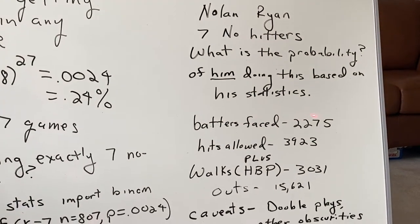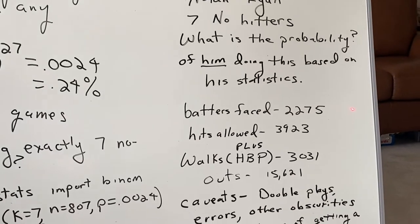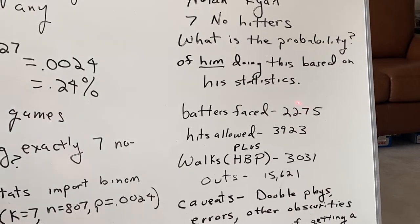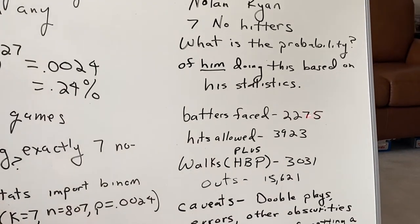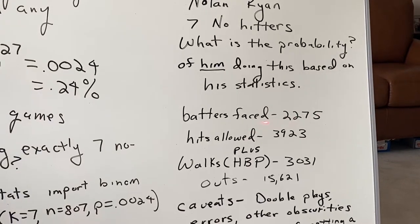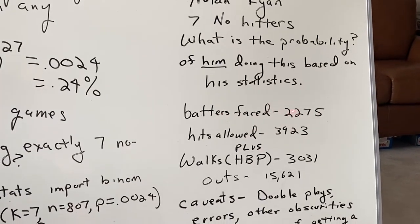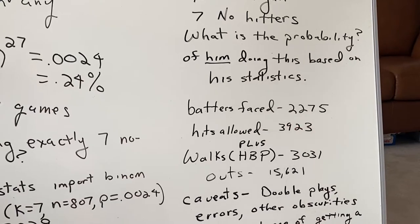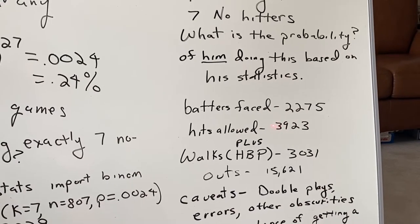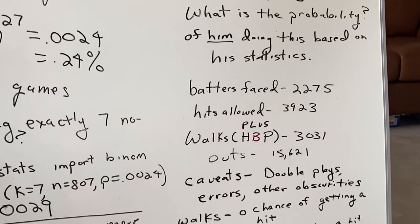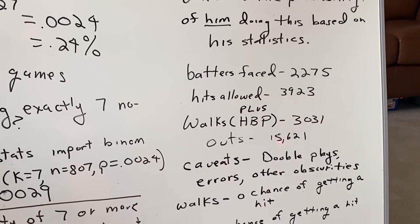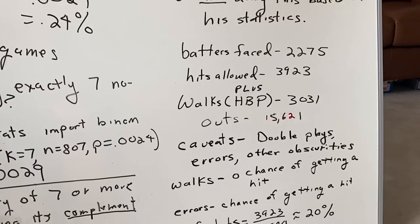One is the batters that he faced. The batters that he faced, I believe I am missing a digit here. That should be 22,750-something. But that's okay. We'll resolve that here in a second. The hits allowed were 3923. His walks plus hits by pitch are 3031. That leaves, as outs, 15621.